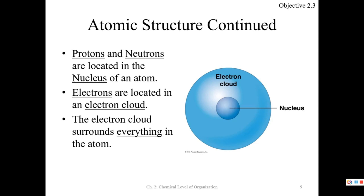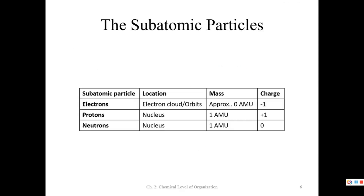Here is one way we can look at an atom — what's called the electron cloud model of an atom. Protons and neutrons are in the nucleus, and the electrons are around the nucleus in what we call the electron cloud. In summary: electrons are in the electron cloud with approximately zero mass and a negative-one charge; protons are in the nucleus with one AMU mass and a plus-one charge; and neutrons are in the nucleus with one AMU mass and a zero charge.